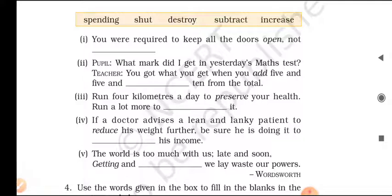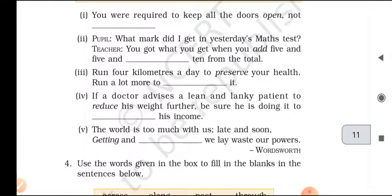You got what you get when you add 5 and 5 and subtract 10 from the total. Question three: Run 4 kilometers a day to preserve your health — run a lot more to destroy it.